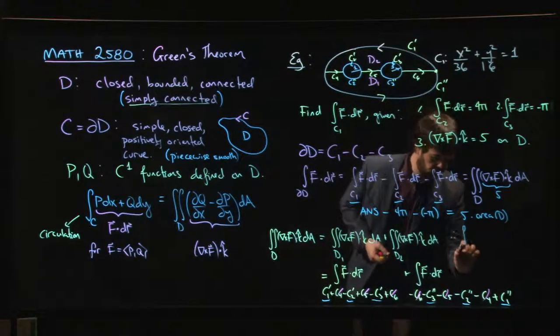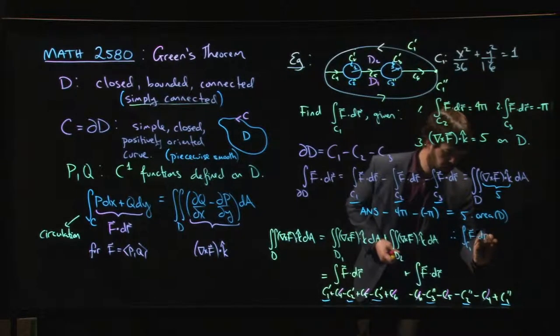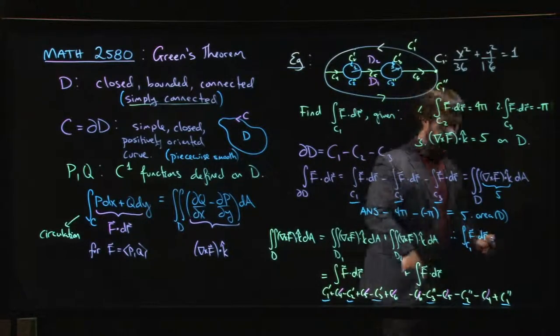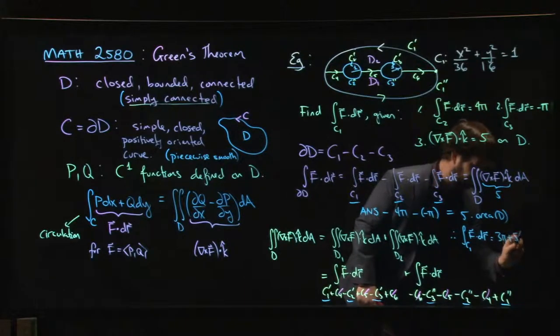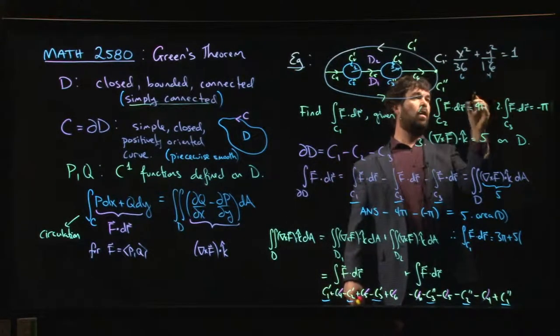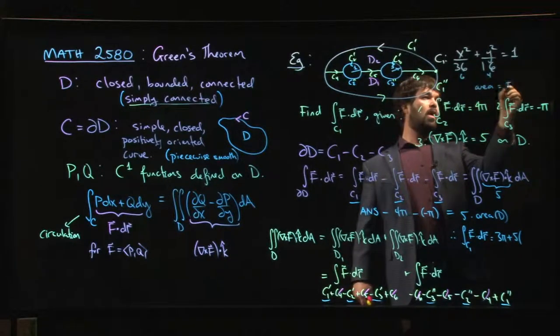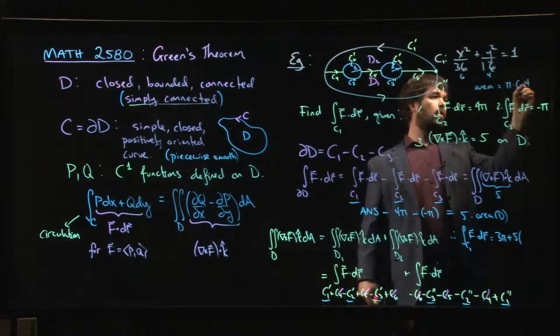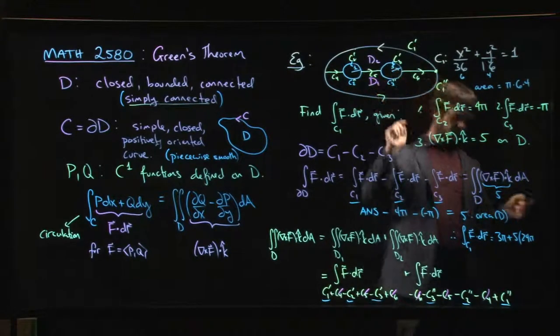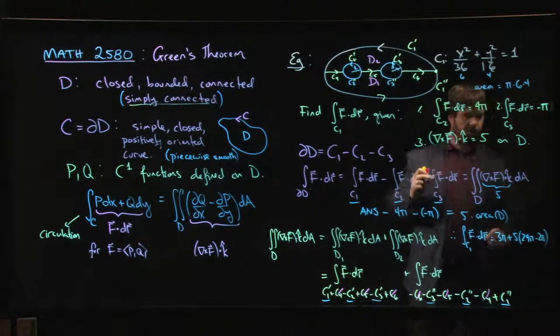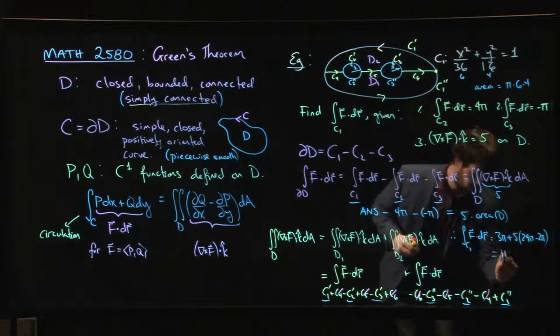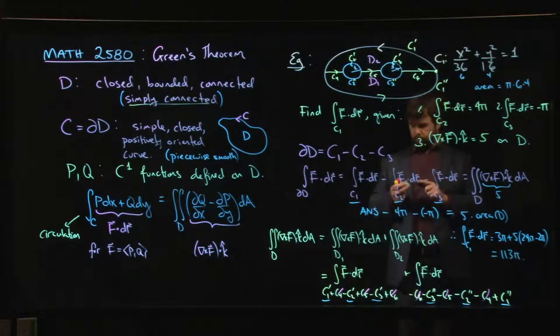So that means that the integral along C1 F dot dr is, okay, so let's see. All together, that's minus 3π. I bring it over to the other side. 3π plus 5 times. So what's the area of the big ellipse? That's a 6, that's a 4. So the area is π times 6 times 4. So 24π minus the two circles, which each have area π. Minus 2π. So that's 22π times 5, 110 plus 3. 113π for my answer.